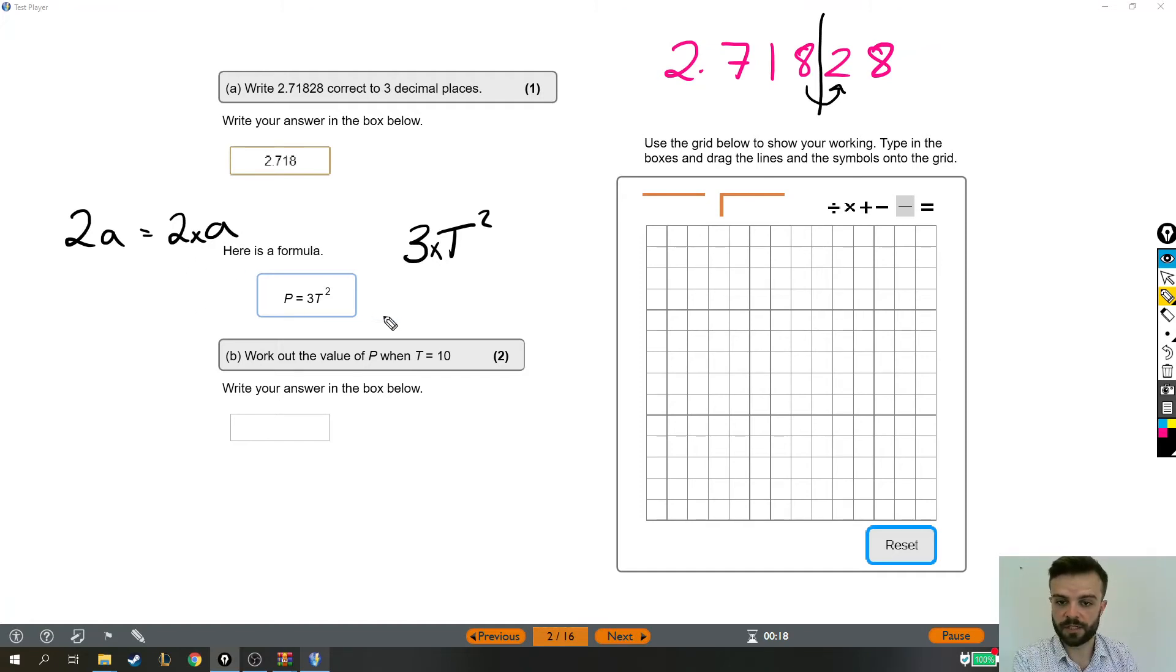And the second thing we need to bear in mind is that because of BIDMAS, B-I-D-M-A-S, brackets come before indices. And indices come before division, multiplication, addition and subtraction.